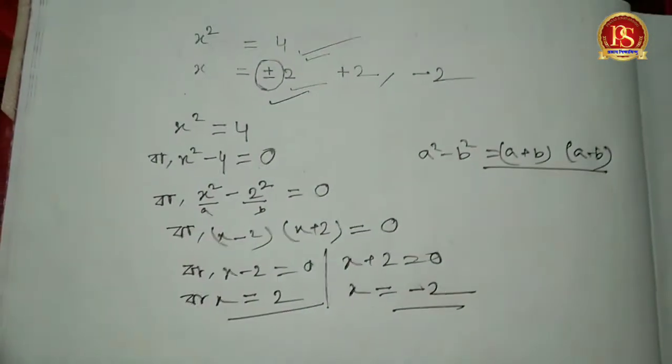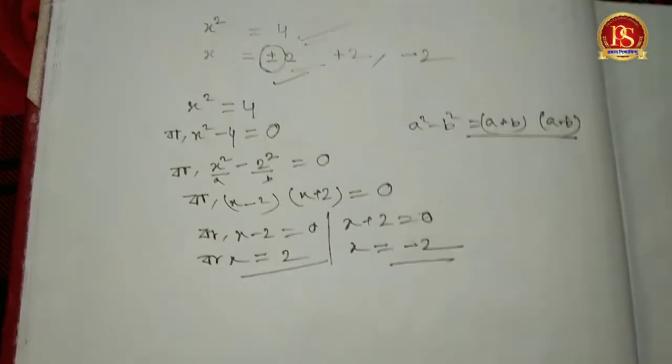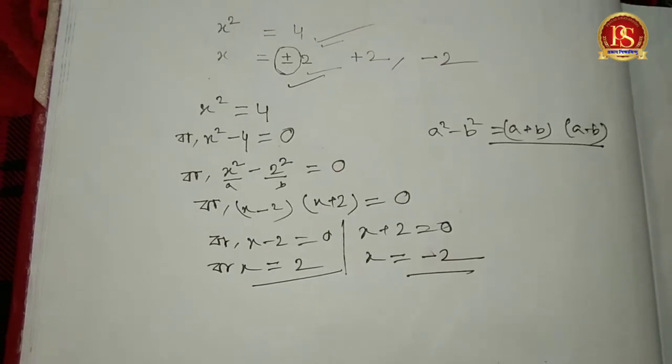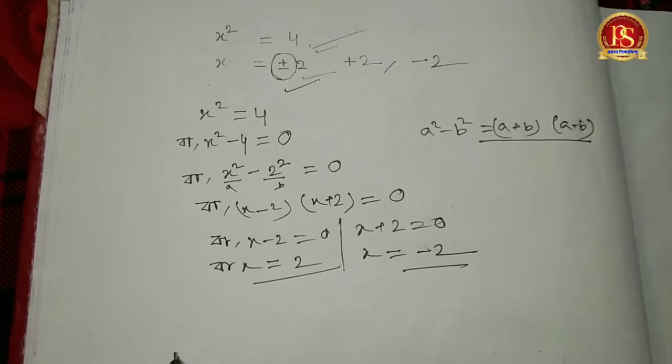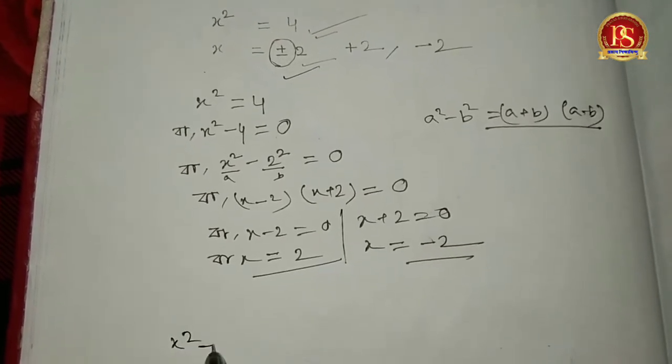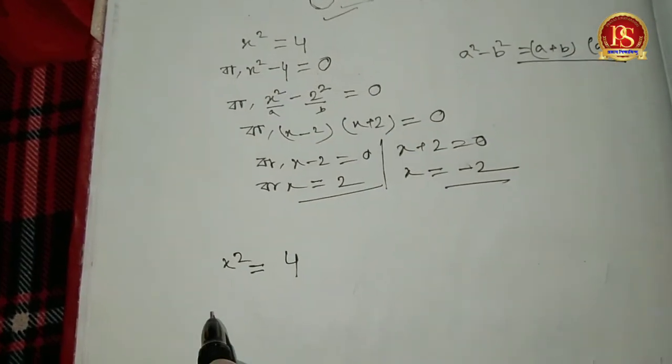Now you understand why we get plus-minus values when solving. Let me show you another approach to see this more clearly. We start with x² = 4.